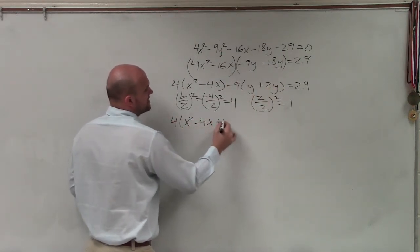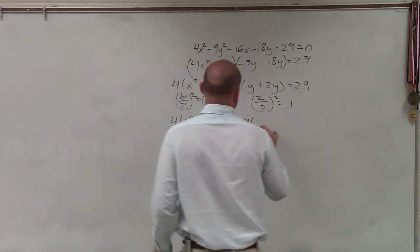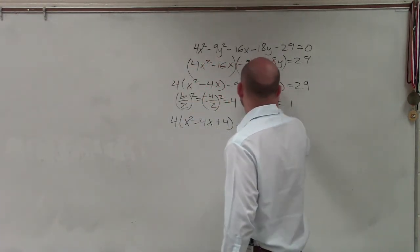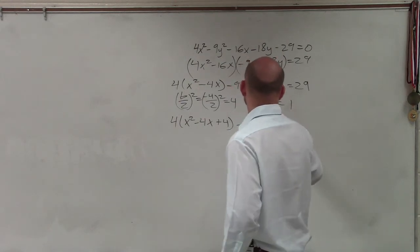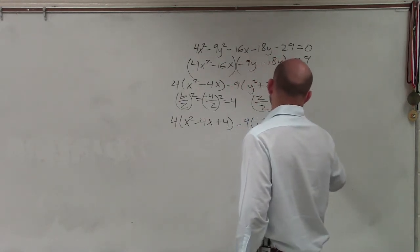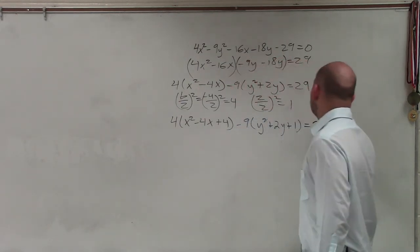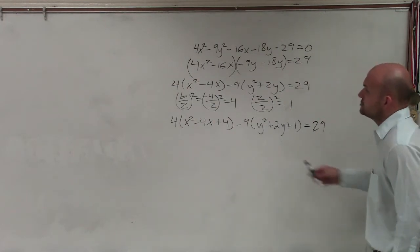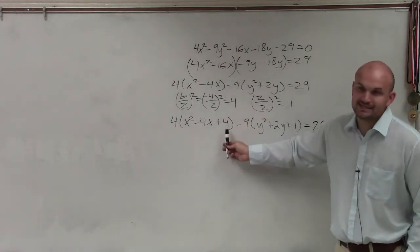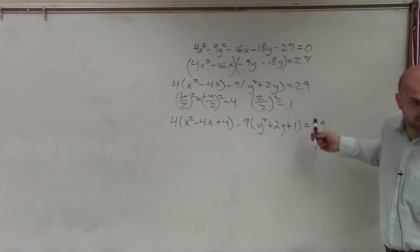is that they forget to not only add them to the other side, that's a squared, but they forget to add them correctly to the other side. So since I took this 4, I added it inside the parentheses. That means I need to add 4 over here.